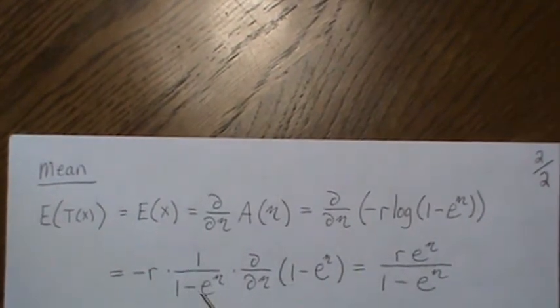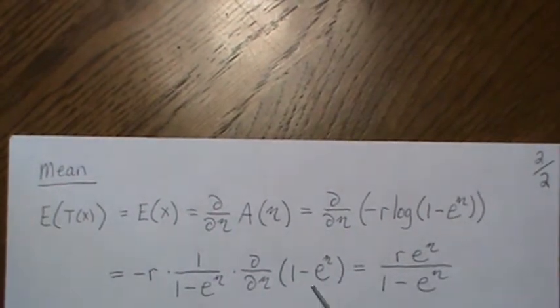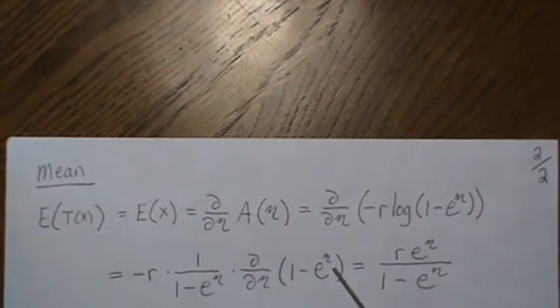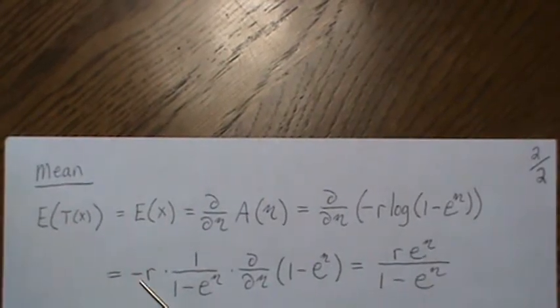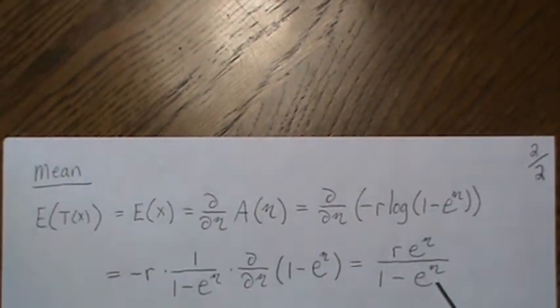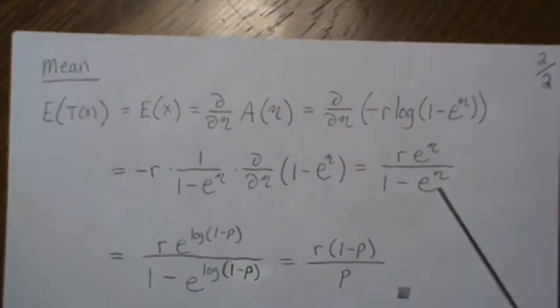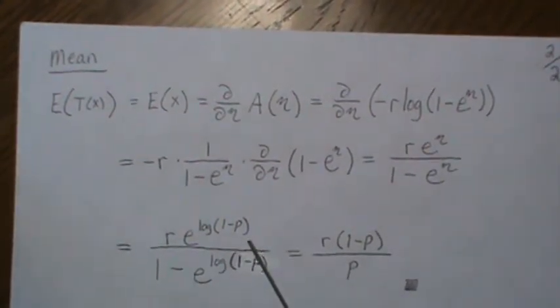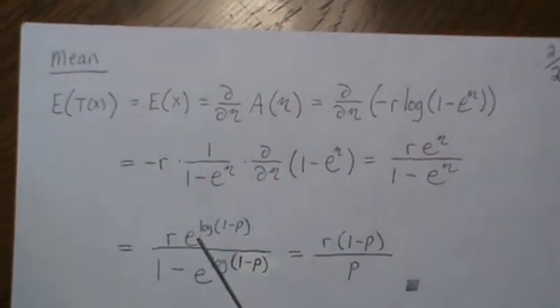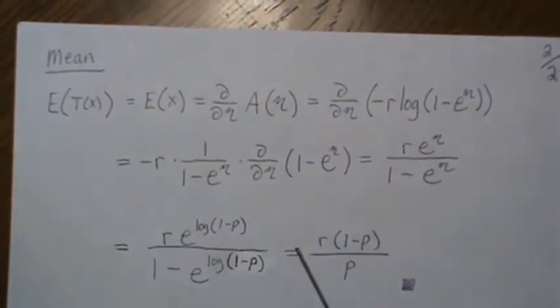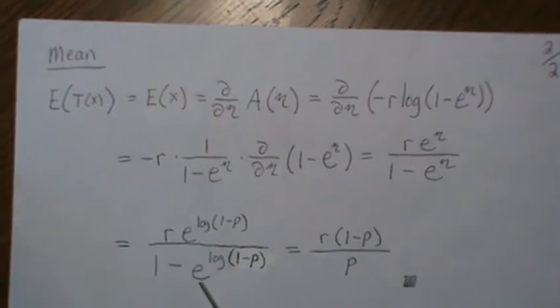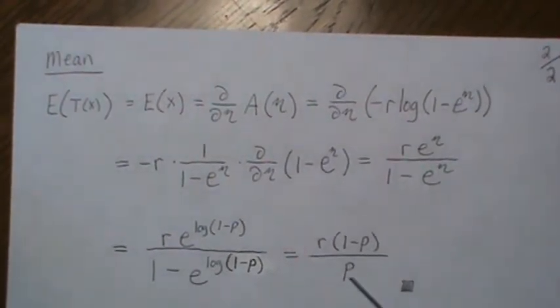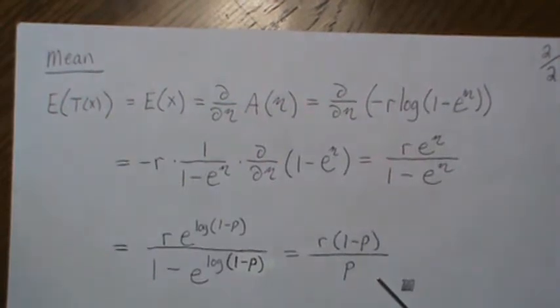Now to take the derivative of a log, the minus r is a constant, so it comes out front. So it's one over, and then times the derivative of this, which is minus e to the eta. So that the minus and minus cancel, and we get this. Now we plug in what we know about eta. And that's the log of one minus p. So the e and the log cancel, and we just get one minus p, e and cancel, and then the one minus this, we just get p. Well, this is the mean of a negative binomial.